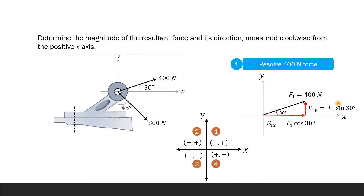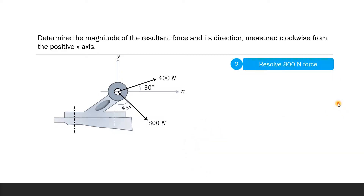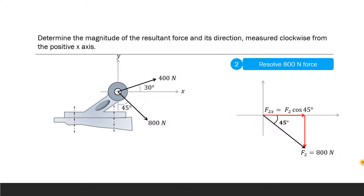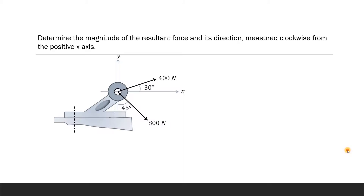Now consider the resolution of the 800 Newton force, which acts in the fourth quadrant at 45 degrees to the positive y-axis. Since the angle with the y-axis is 45 degrees, the angle with the positive x-axis is 90 minus 45, which is also 45 degrees. The x-component F2x equals F2 cos 45, and the y-component F2y equals F2 sin 45. F2x is along the positive x-direction so it is positive, whereas F2y is along the negative y-direction so it is negative.